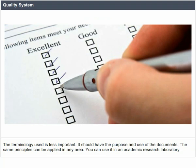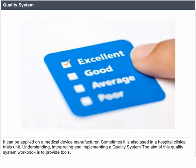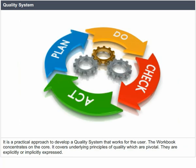The same quality system principles can be applied in any area — an academic research laboratory, a medical device manufacturer, a hospital, or clinical trial units. The aim of this quality system workbook is to provide tools and a practical approach to develop a quality system that works for the user. The workbook concentrates on the core underlying principles of quality, which are pivotal whether explicitly or implicitly expressed.